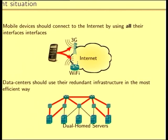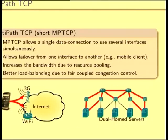If you could use all the interfaces available, data centers would benefit a lot too. At the IETF, there's a solution being standardized: Multipath TCP. Multipath TCP allows you to use several interfaces for the same data connection. That way, you are pooling all your resources and have potentially higher bandwidth. You can also benefit from failover capabilities, and especially for data centers, you have better load balancing due to a fair coupled congestion control, which schedules traffic among interfaces so the load is fairly distributed over the links in your data center.